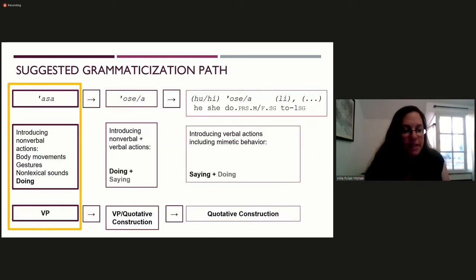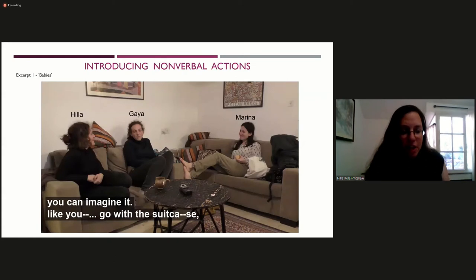Moving now to the analysis, first I demonstrate the stages of the suggested grammaticization path. We'll first see an asa token introducing non-verbal actions. Prior to the beginning of this excerpt, Marina tells her friends Gaia and Ila that she is about to travel to Uganda for 10 days. Ila expresses her concern regarding Uri, Marina's one-year-old baby, and in response Marina jokingly conveys that Putski, Gaia's baby, who is around the same age as Uri, will look after Uri since one can trust Putski. Ila agrees with this statement and depicts the imaginary scene in the eyes of her friends. Let's watch.